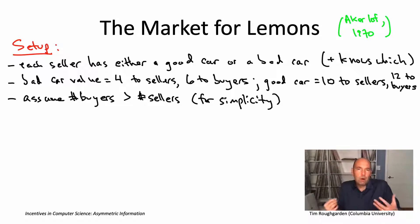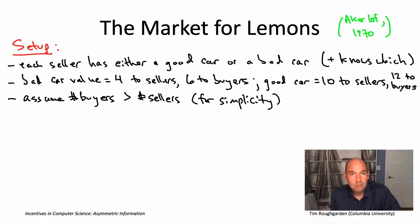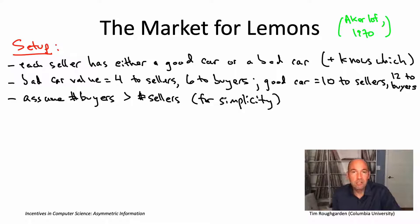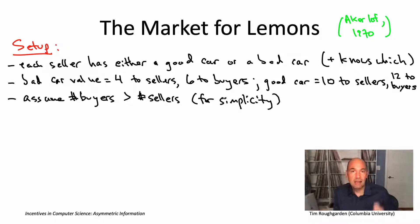Given this setup, what do we want to see happen? We want to see all of the cars get sold. We have a good match between buyers who are willing to pay more than what sellers would be happy to accept. So we'd like to see all the good cars sold for a fair price — somewhere between ten and twelve — and all the bad cars sold for a fair price — somewhere between four and six. That would be a successful market outcome.